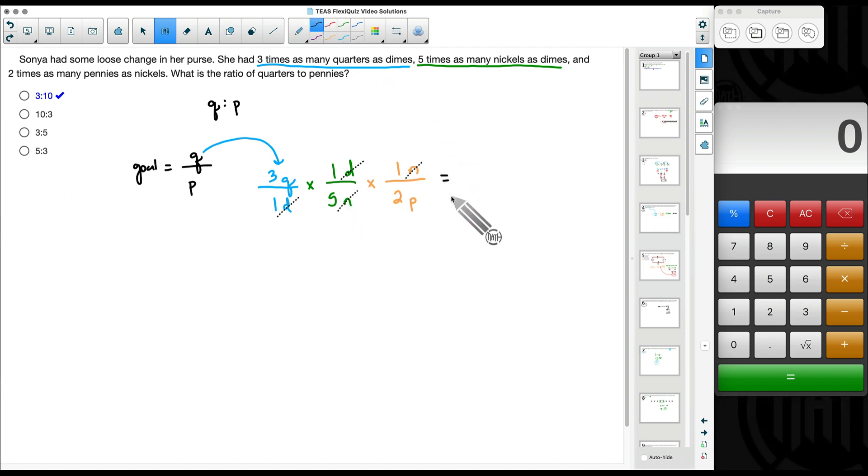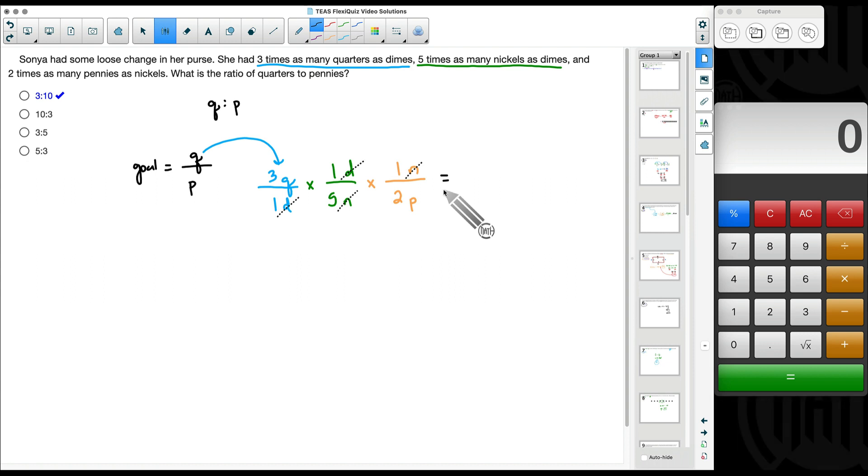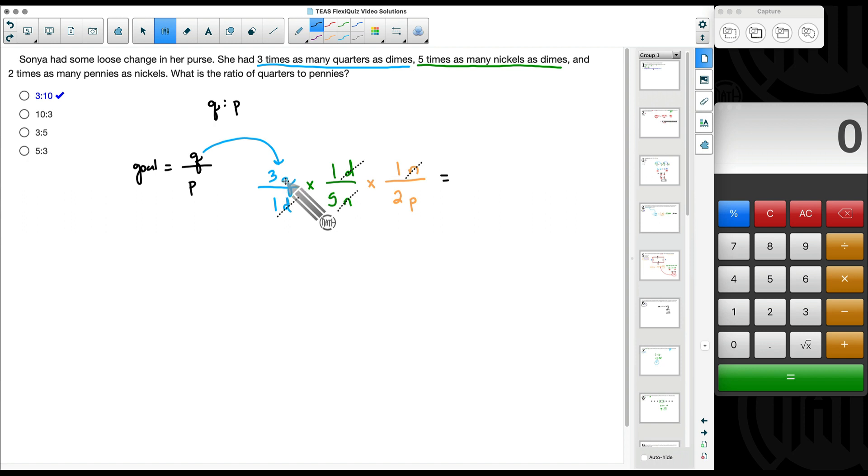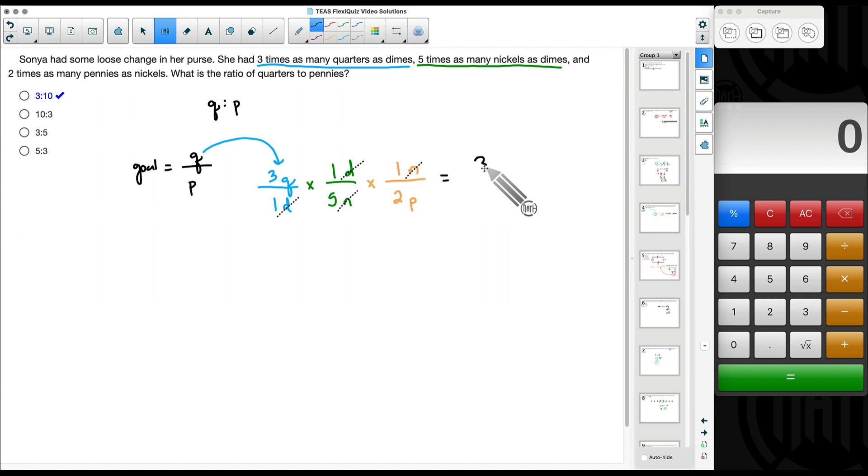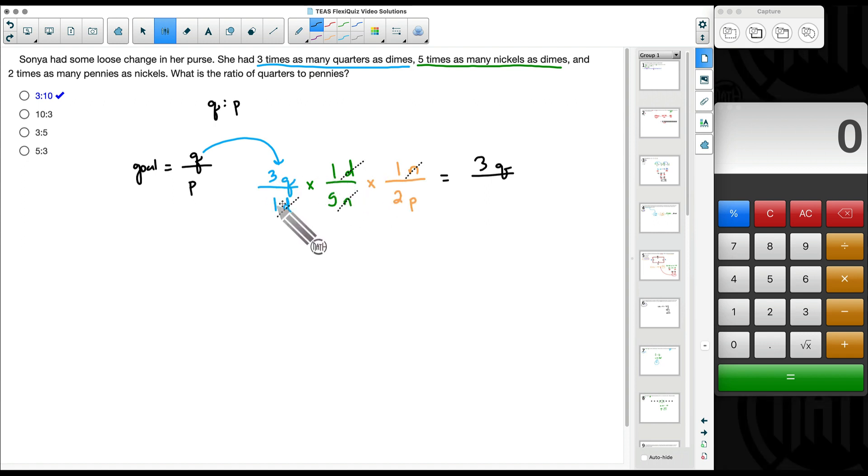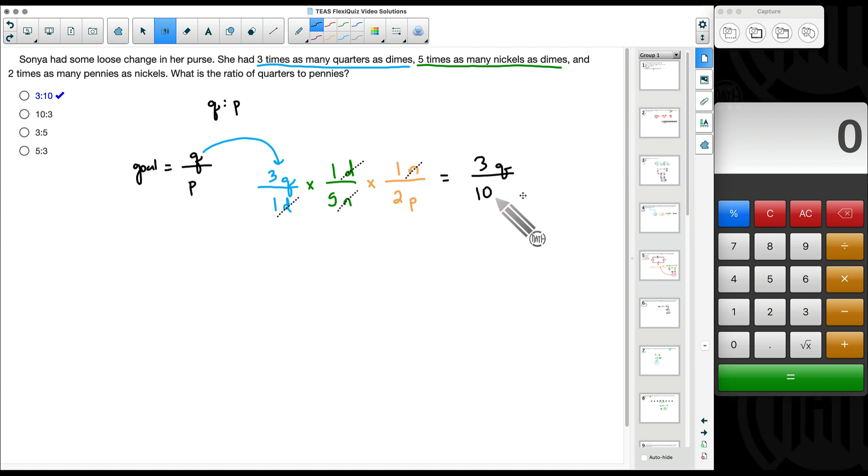Now let's multiply across the top. And we're also going to multiply across the bottom. I know when I've done dimensional analysis in other solutions, we multiply the top numbers, divide by the bottom numbers. But look at what we have here. We have quarters up top, pennies at the bottom. Multiplying our top numbers, we get three. Three times one times one. And I'm going to put a Q up there because that is our quarters. That's the only word we have left. At the bottom, one times five times two is ten. The only word we have left down here is pennies. And here's our ratio.